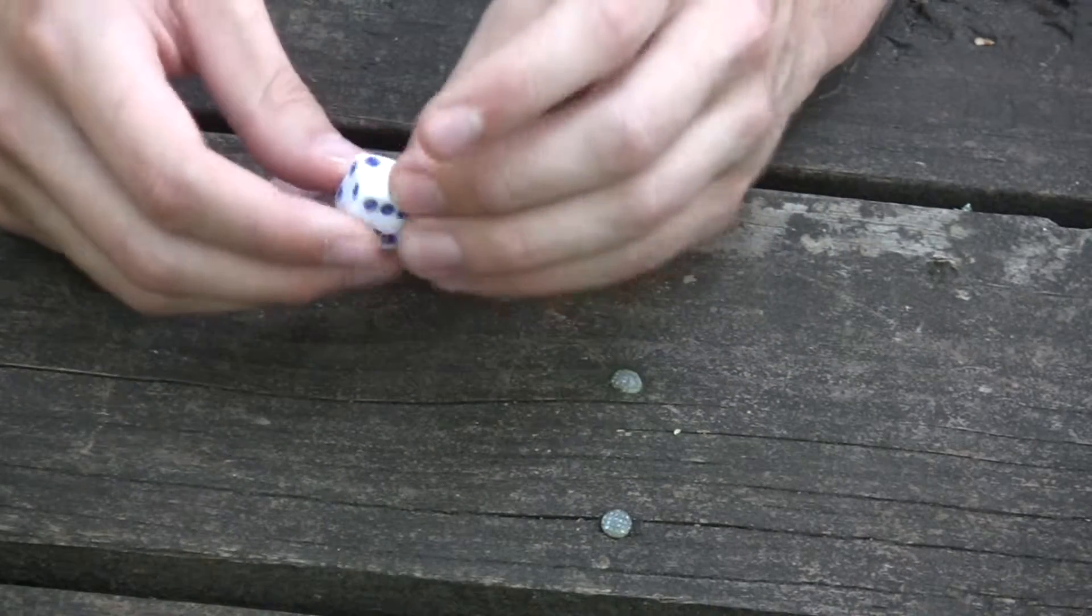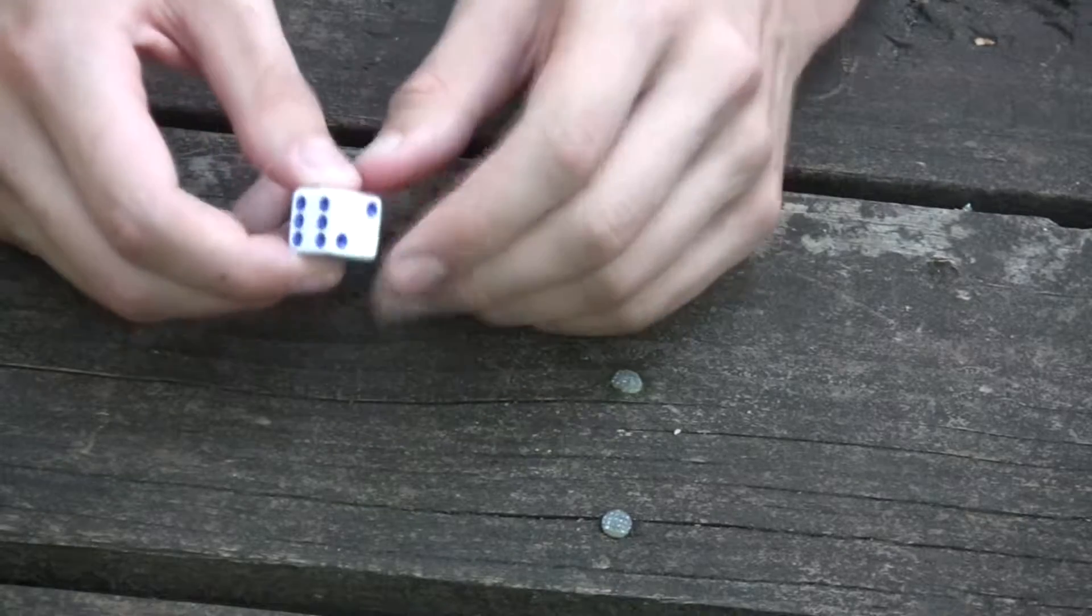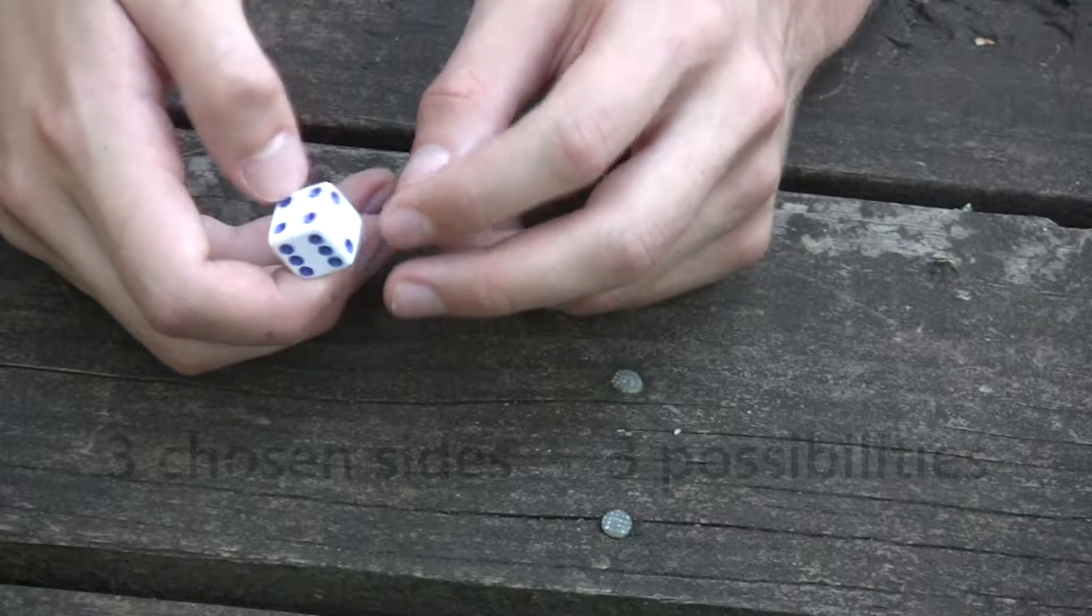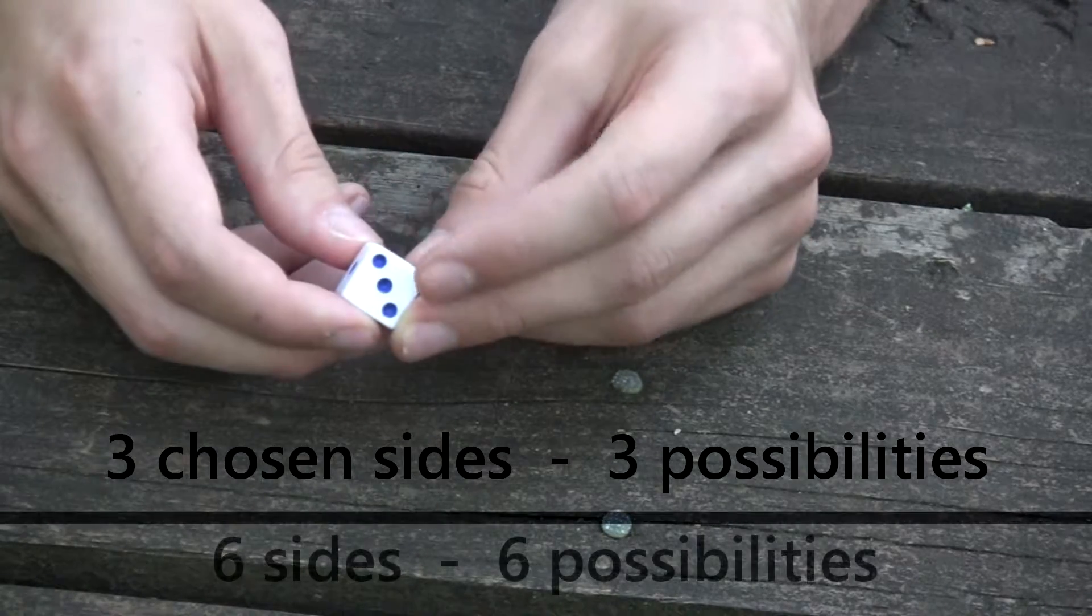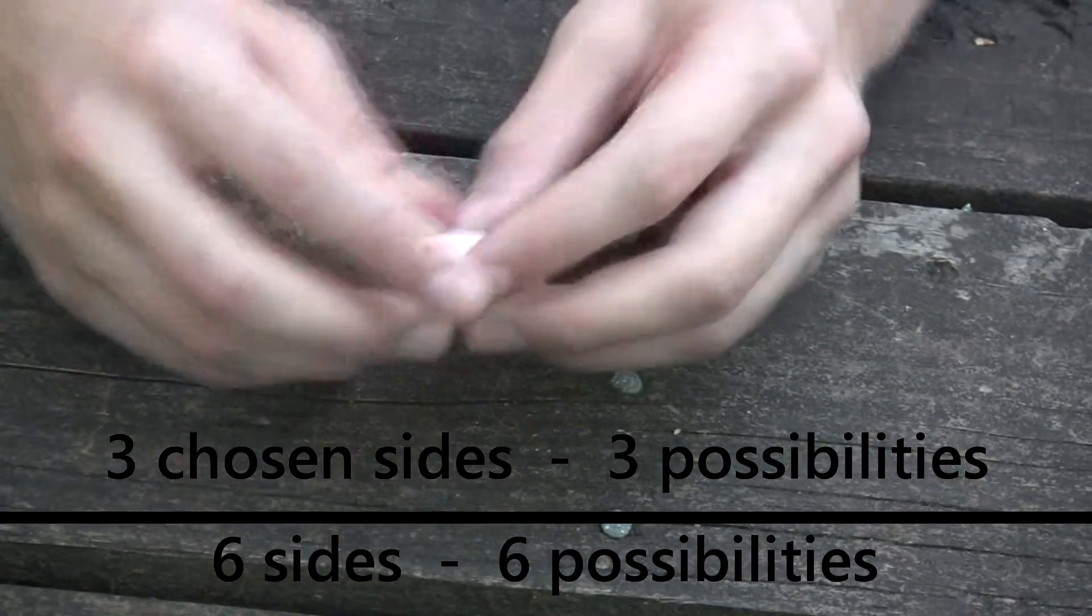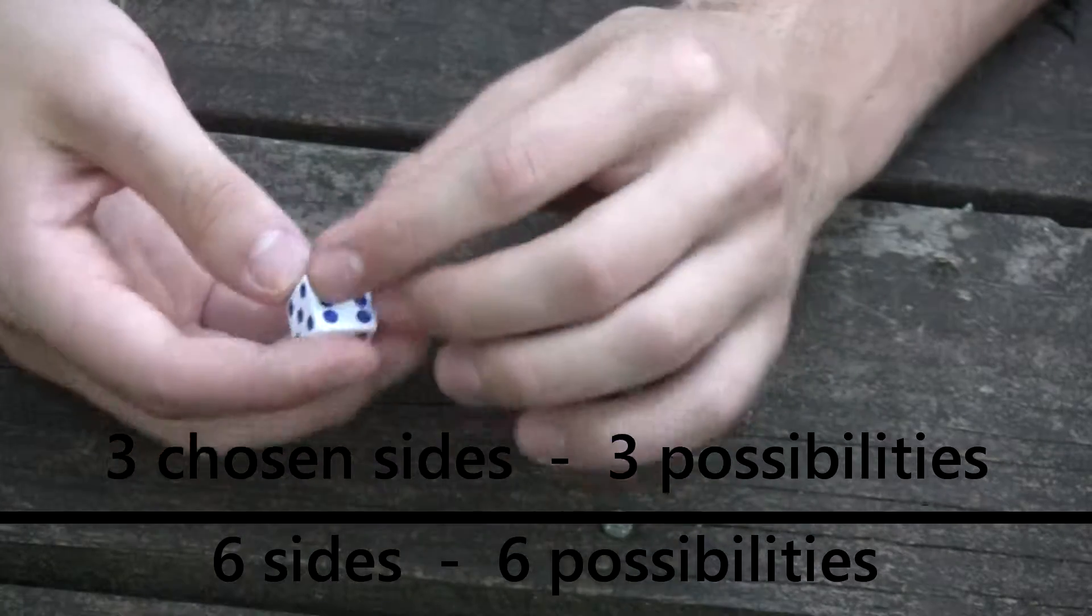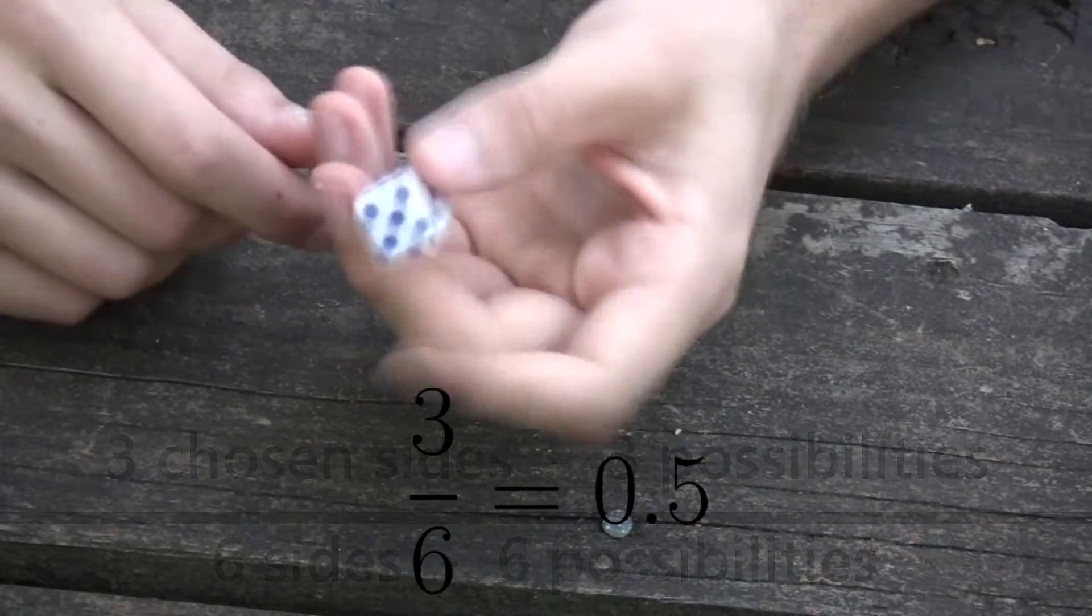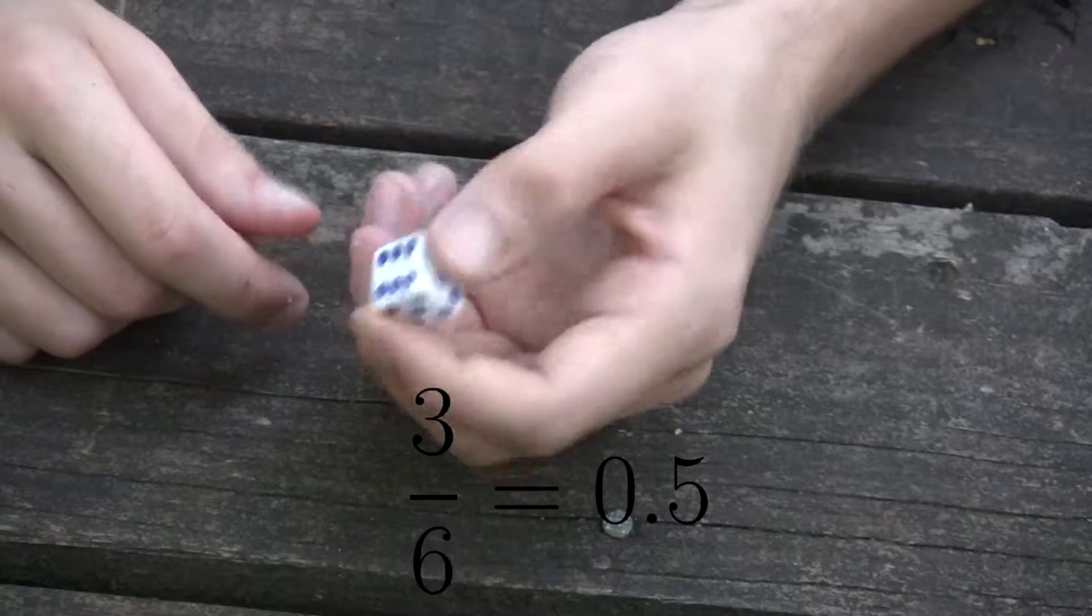Now what if we looked at just the even numbers, two, four, and six. What's the probability of rolling this? Well, we see that there are three options here, and we know that there are six options in total. We have either evens or we have odds. Now we take the number of predicted outcomes, we want either a two, or a four, or a six, so that's three, and there's six possible outcomes, so it's three-sixths. That makes sense. Half of these are even, half are odd, so there's a 0.5 chance of rolling an even here.